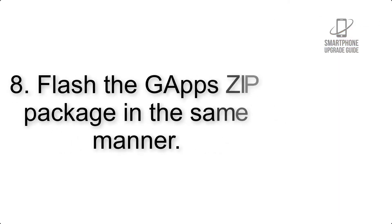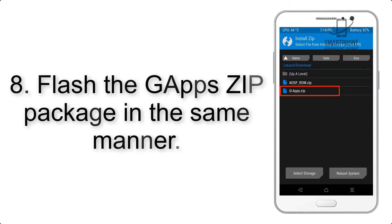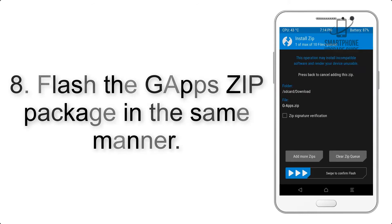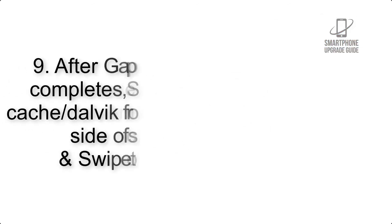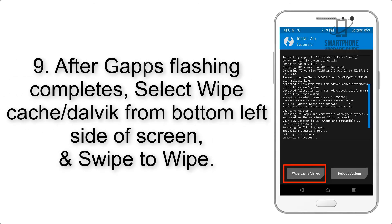Step 7: Swipe the button on the screen to install the ROM file. Step 8: Flash the gapps zip package in the same manner.